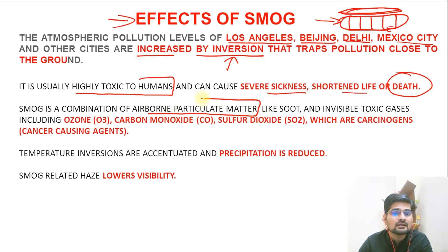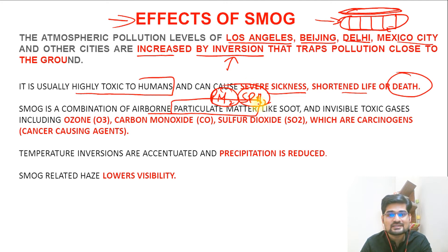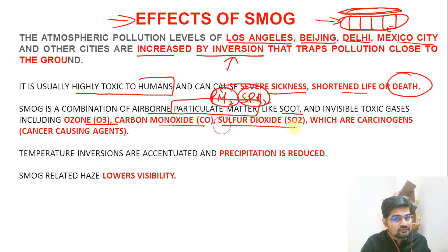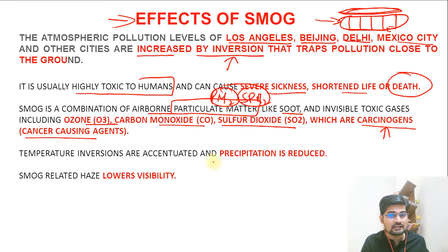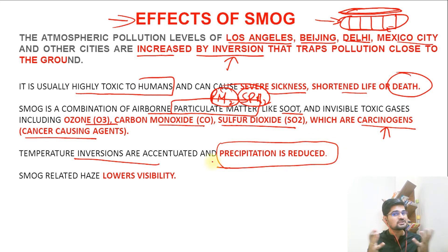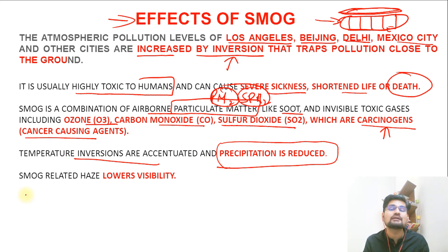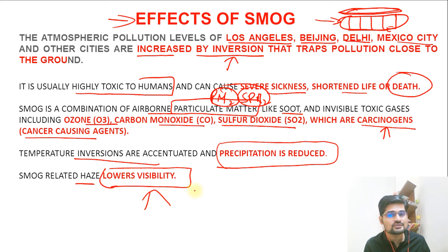Smog is a combination of airborne particulate matter — PM2.5 and SPM levels that we keep hearing about. It contains soot material and invisible toxic gases including ozone, carbon monoxide, and sulfur dioxide, which are carcinogens — cancer-causing agents. Temperature inversions are accentuated and precipitation is reduced, meaning cloud formation doesn't happen and smog keeps hanging for long periods — even weeks — continuously affecting human health through breathing. Smog-related haze also lowers visibility, which is another significant problem.